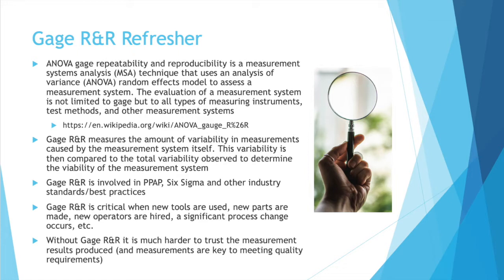The R&R in gauge R&R stands for repeatability and reproducibility. The evaluation of a measurement system is not limited to gauge, but to all types of measuring instruments, test methods, and other measurement systems. Gauge R&R measures the amount of variability in measurements caused by the measurement system itself. This variability is then compared to the total variability observed to determine the viability of the measurement system, because your measurement system is never going to be perfect.